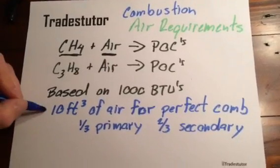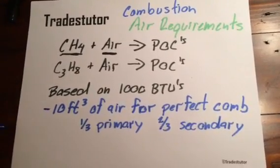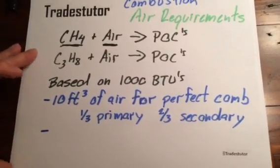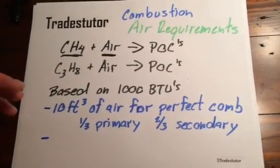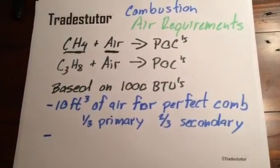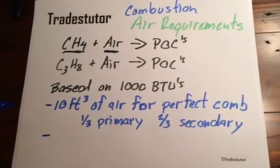Now, as well as having this, we also need to supply some excess air. So, for an atmospheric burner or a natural draft burner, what we generally say is you supply 50% of combustion air.